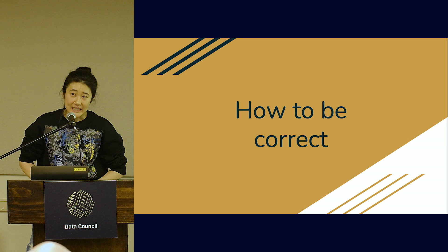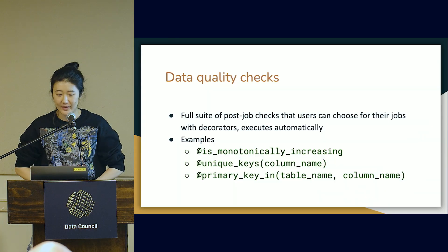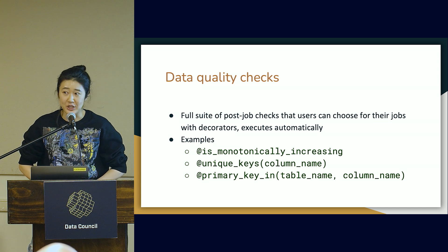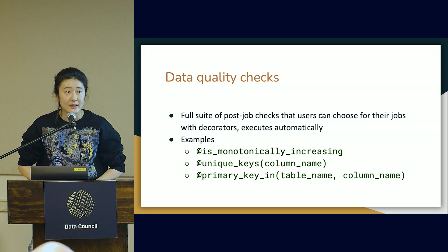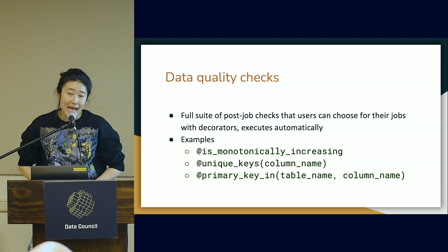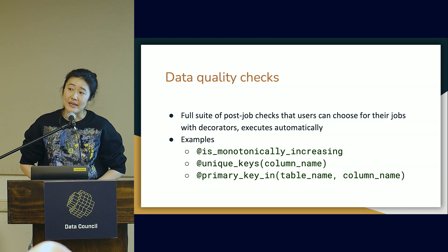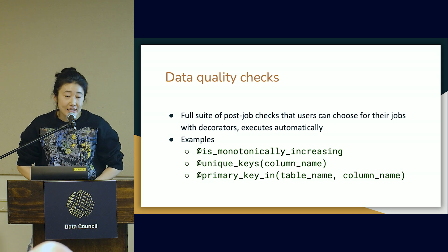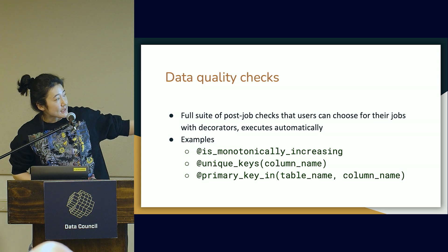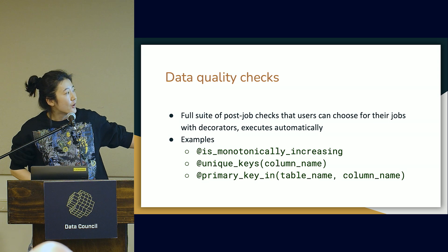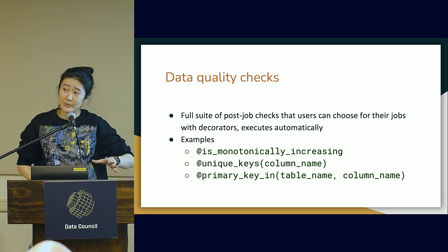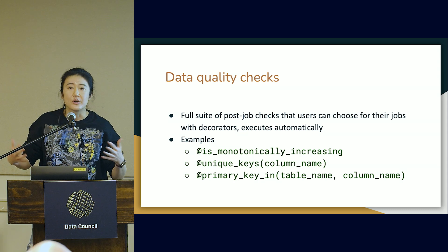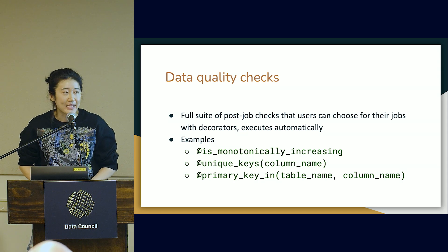So how do we ensure correctness at Stripe? We start with a lot of automated checks. We provide these checks for our users, and our users can also write their own checks. They're basically a very simple Airflow decorator — a scheduler we use — that you can call in. These jobs will run automatically after the job if you use the correct decorator. The decorators are simple, like making sure data is increasing and never decreasing, or that there are unique keys. There are also more complicated checks that verify primary keys in the resulting table actually exist in another table.